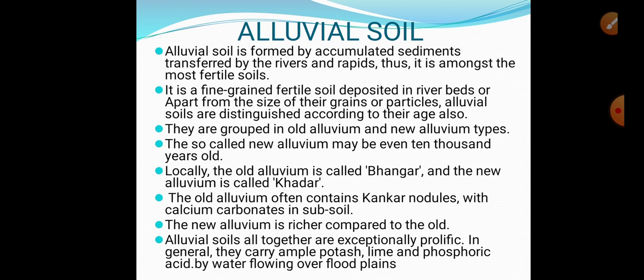Alluvial soils are exceptionally prolific. In general, they carry ample potash, lime, and phosphoric acid brought by water flowing over the flood plains. The Ganga, the Brahmaputra, and the Indus rivers flow from the Himalayan mountains through sloped regions, giving the water speed. In this speed, they carry different types of eroded material from the mountainous region and deposit it on the plain land. Due to this, the northern plains have been formed where alluvial soil accumulates.